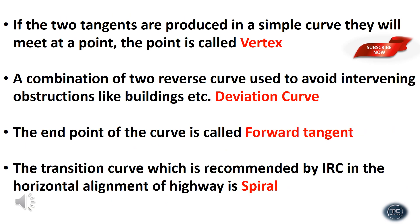If the two tangents are produced in a simple curve, they will meet at a point called the vertex. A combination of two reverse curves used to avoid intervening obstacles like buildings is called a deviation curve. The end point of the curve is called the forward tangent.